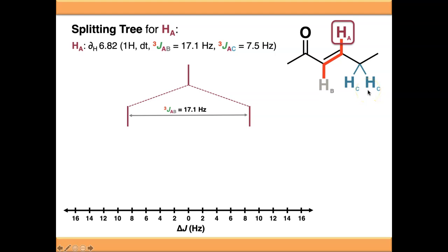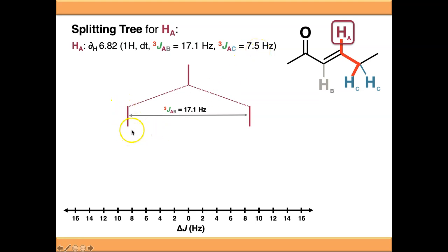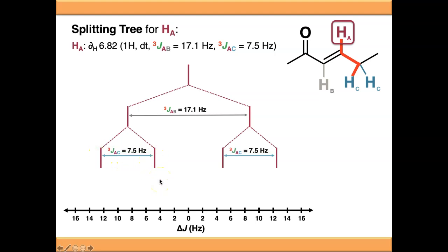But HC does exist, so we're going to have to couple against those as well. Whenever you've got multiple equivalent protons, you couple against both of them individually - that's just how splitting trees work. The magnitude of the J value now is 7.5 Hz. So we need to take these two signals that we've just created and split them again by 7.5 Hz - go half of 7.5 in one direction and half of 7.5 in the other, so that the gap between the signals is 7.5 Hz.